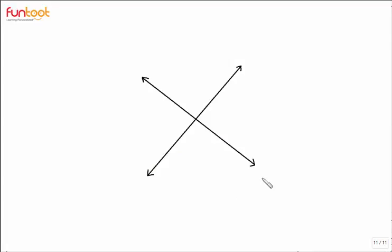We have a pair of intersecting lines here. How many pairs of vertically opposite angles can we have? We can see one pair and a second pair — so we can have two pairs of vertically opposite angles from a pair of intersecting lines.